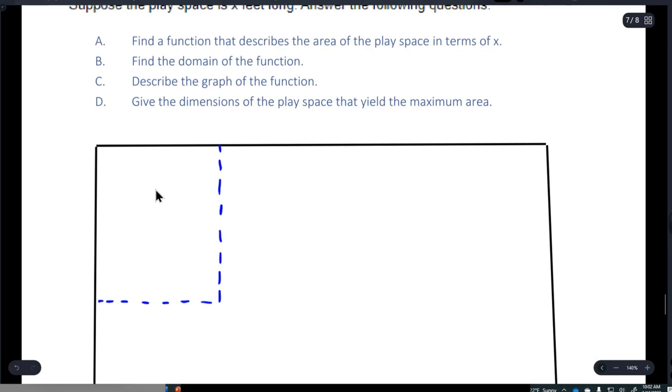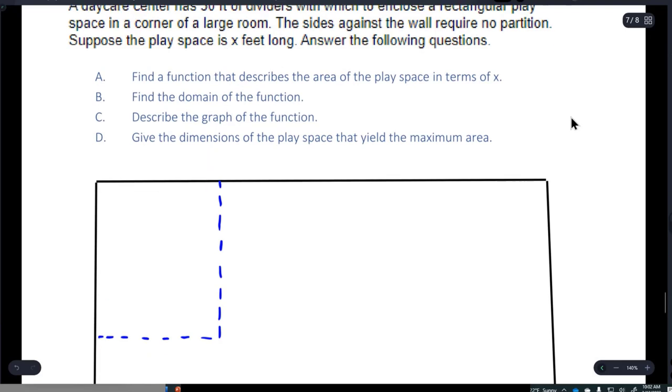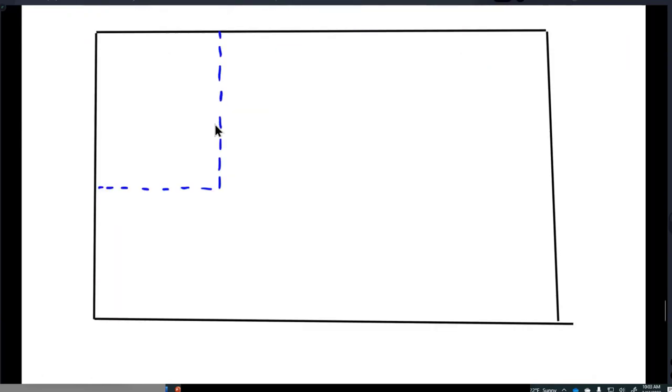They have, in fact, 30 feet of dividers, which are partitions. Let's make them blue. And what they want to do is they want to set up a rectangular play space in the corner here. So the blue things are the dividers and the black things are the walls that are already there. Suppose the play space is X feet long.